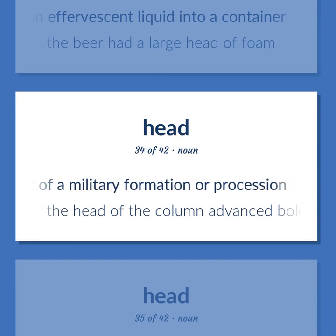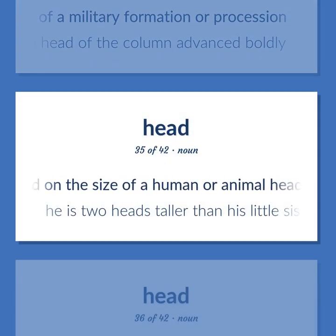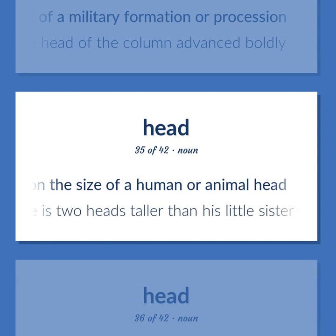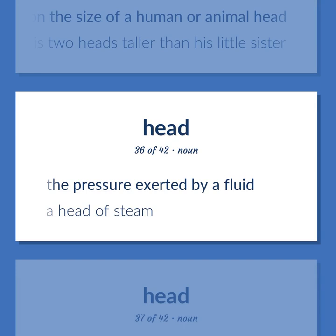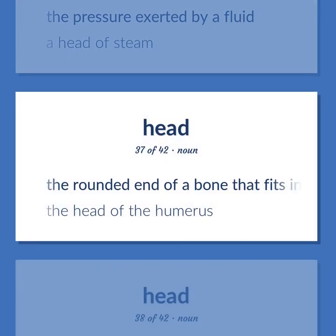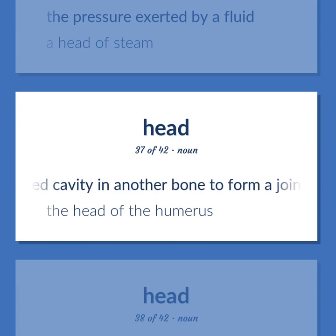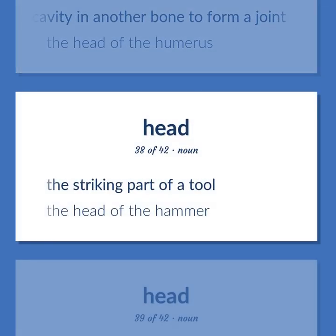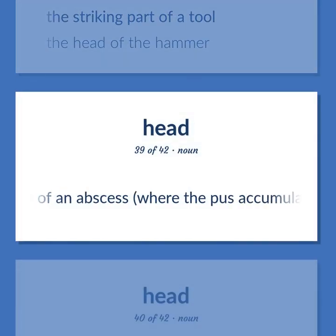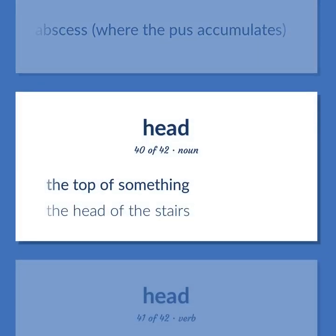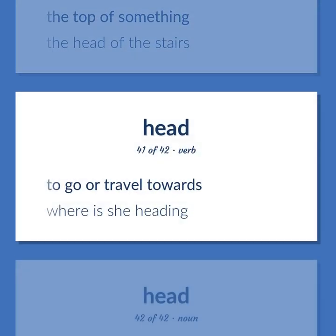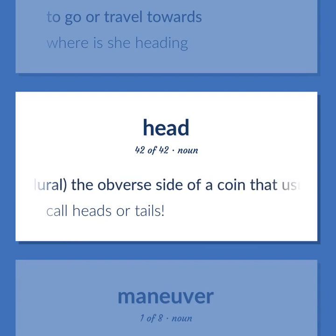That part of a skeletal muscle that is away from the bone that it moves. The foam or froth that accumulates at the top when you pour an effervescent liquid into a container. The beer had a large head of foam. The front of a military formation or procession. The head of the column advanced boldly. The length or height based on the size of a human or animal head. He is two heads taller than his little sister. The pressure exerted by a fluid — a head of steam. The rounded end of a bone that fits into a rounded cavity in another bone to form a joint — the head of the humerus. The striking part of a tool — the head of the hammer. The tip of an abscess where the pus accumulates. The top of something — the head of the stairs. To go or travel towards. Where is she heading? Usually plural: the obverse side of a coin that usually bears the representation of a person's head. Call heads or tails.